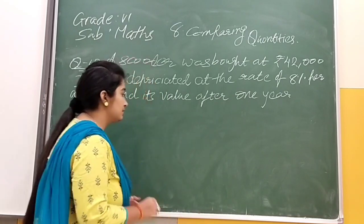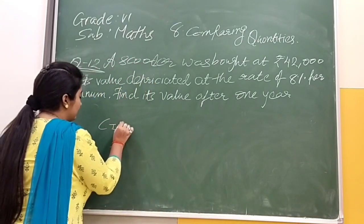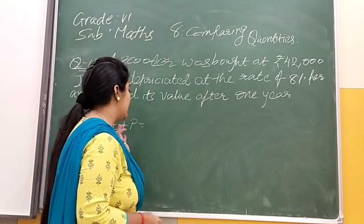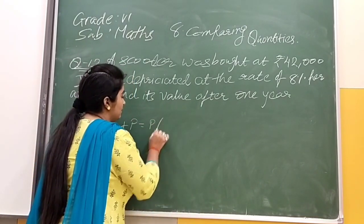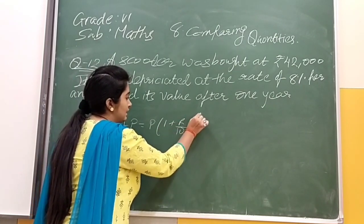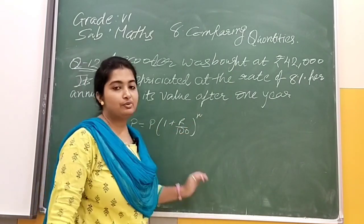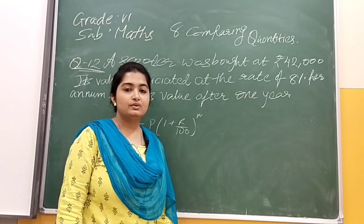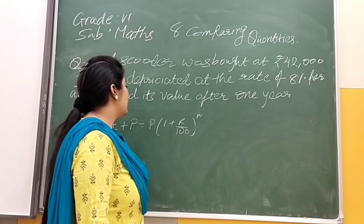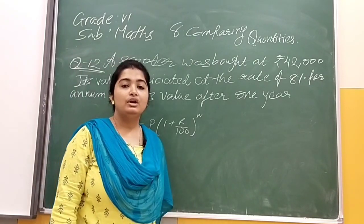When we have to find an increasing value, we use the compound interest formula: CI+P = P(1 + r/100)^n. But here we won't use this formula. We will use a different formula because here the scooter's value is decreasing.